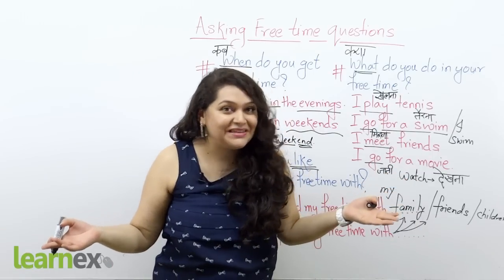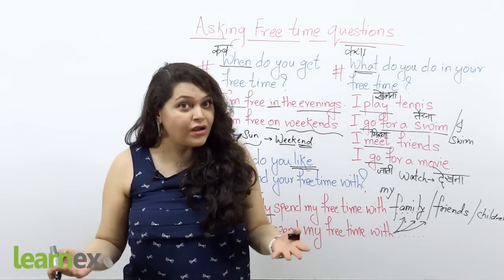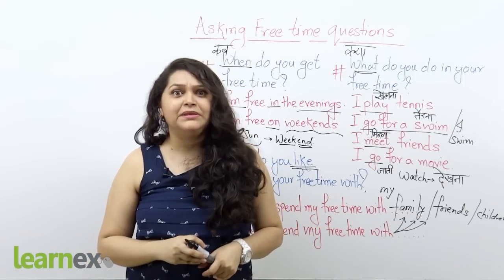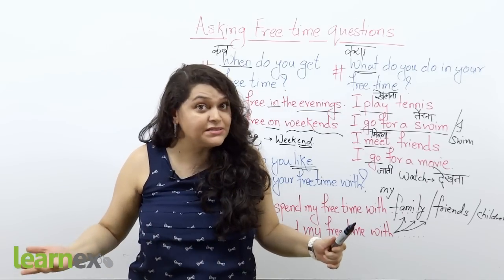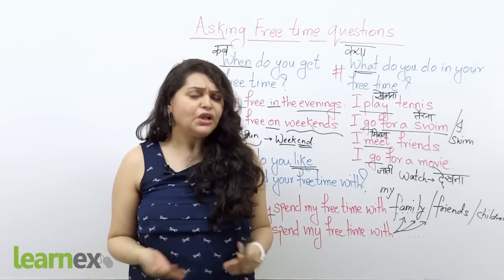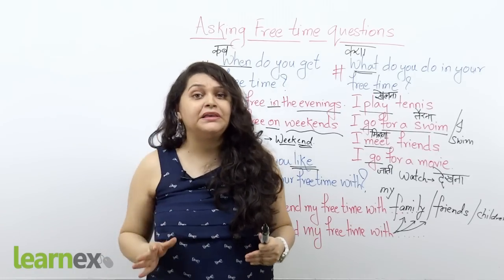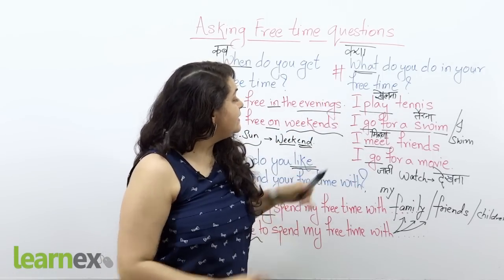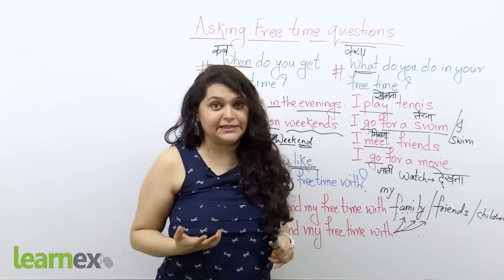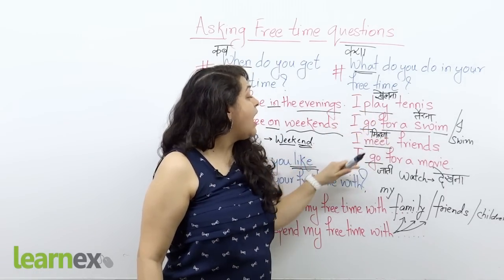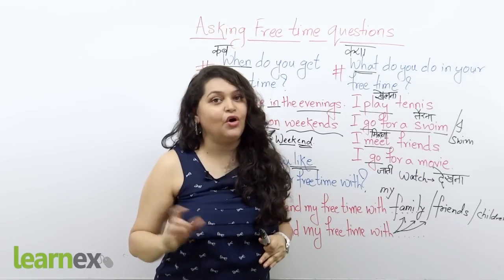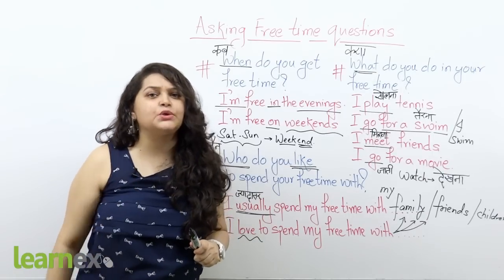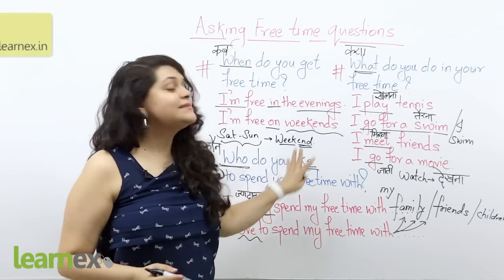More answers to 'What do you do in your free time?': 'I go shopping,' 'I go for a walk,' 'I go for dance class.' There are many answers depending on what you prefer. The key is to use verbs like 'I go,' 'I play,' and 'I watch' — then add your activity. A little practice and you will get this just right.